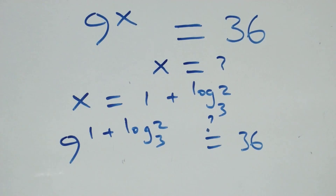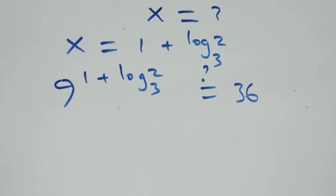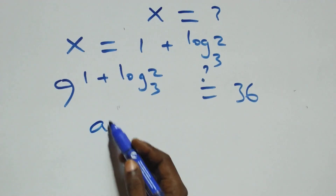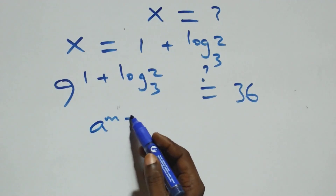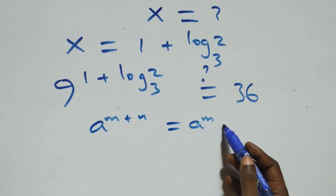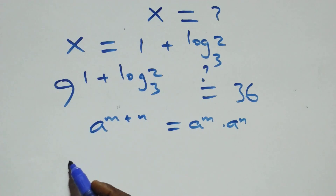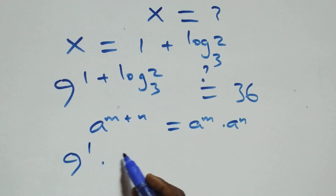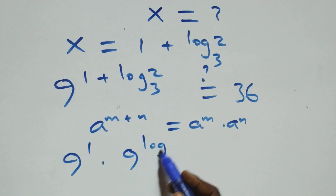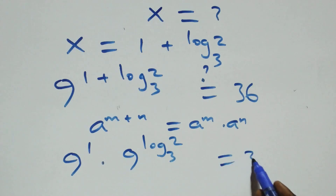We apply the law of indices: a^(m+n) equals a^m times a^n. So 9^(1 + log₃2) becomes 9^1 times 9^(log₃2), and we check whether this equals 36.